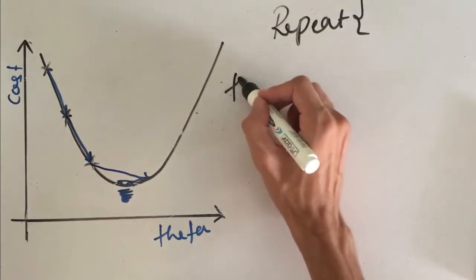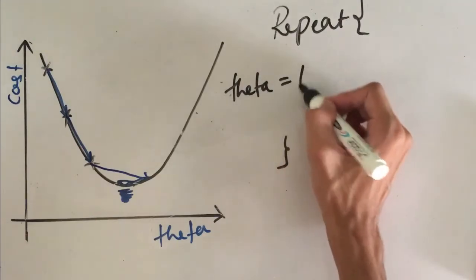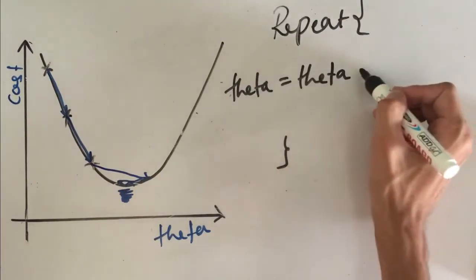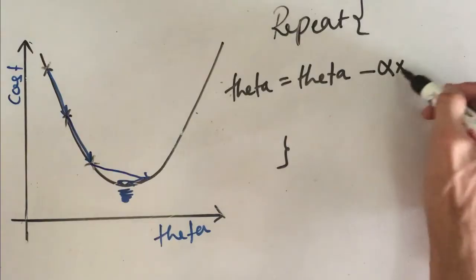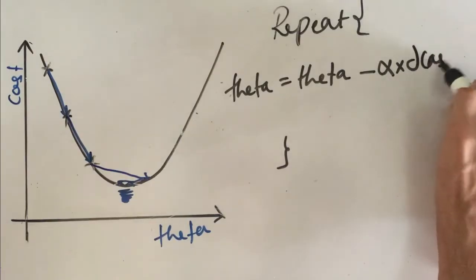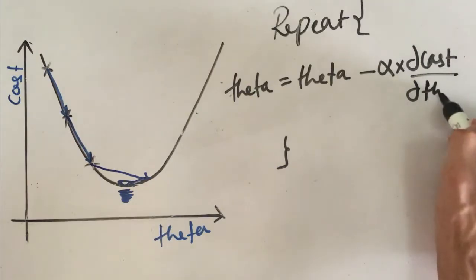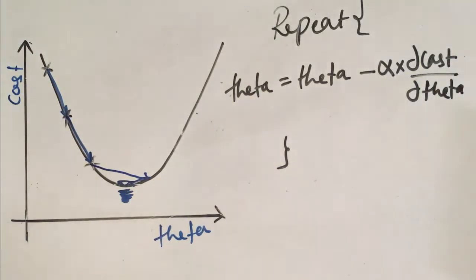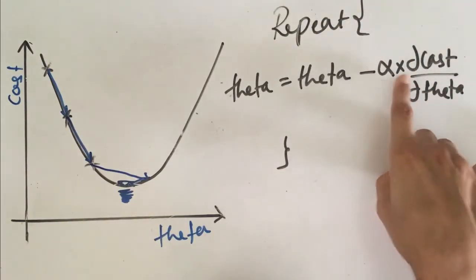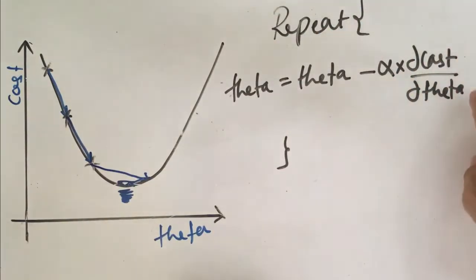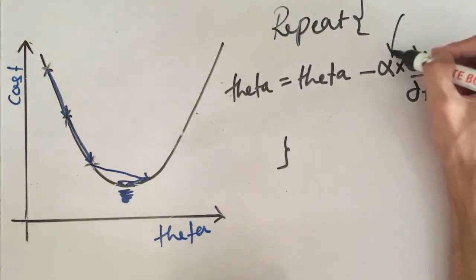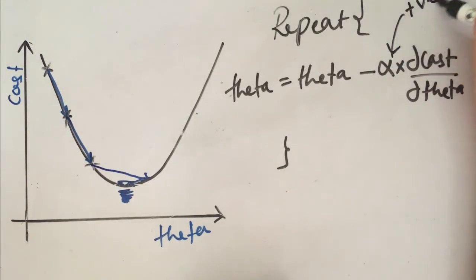What we do in gradient descent is repeat this step: theta equals theta minus alpha times the derivative of cost with respect to theta. Alpha here is a positive constant.